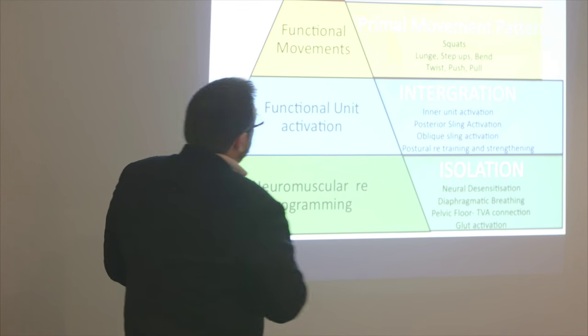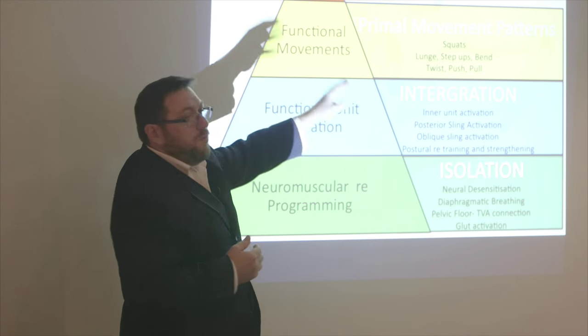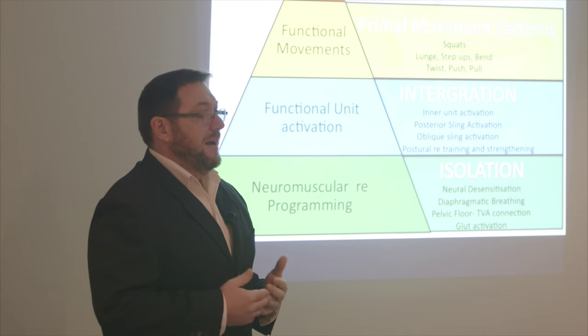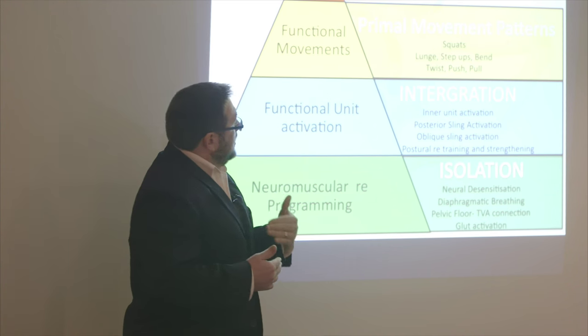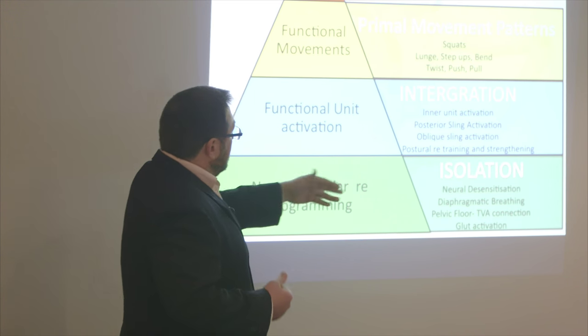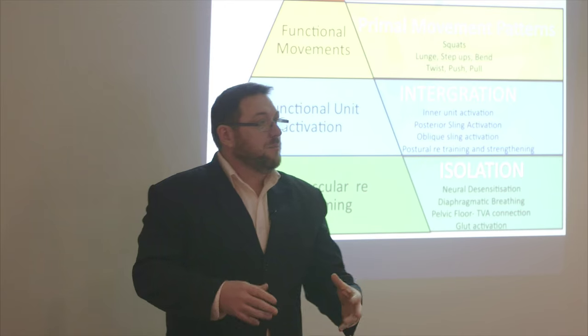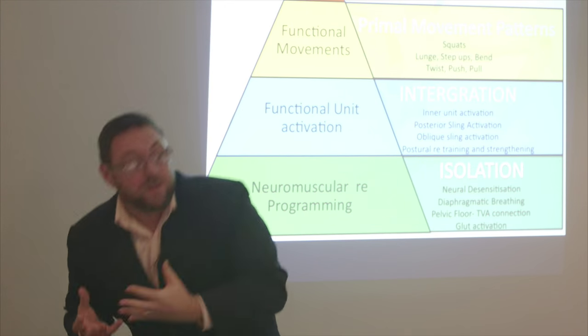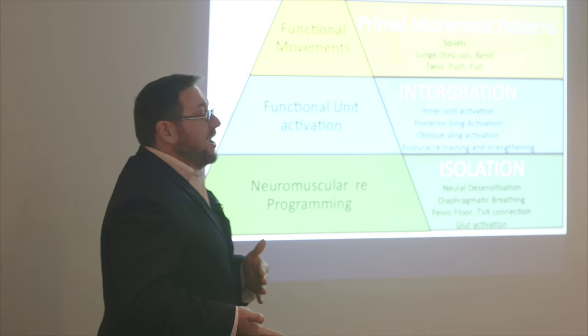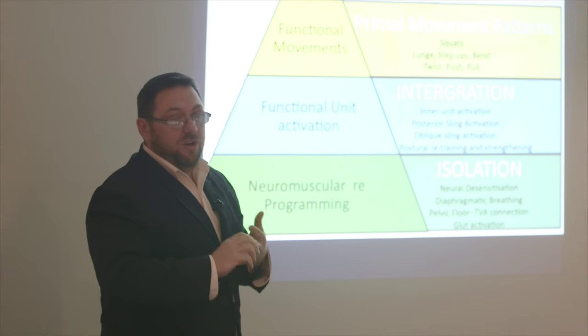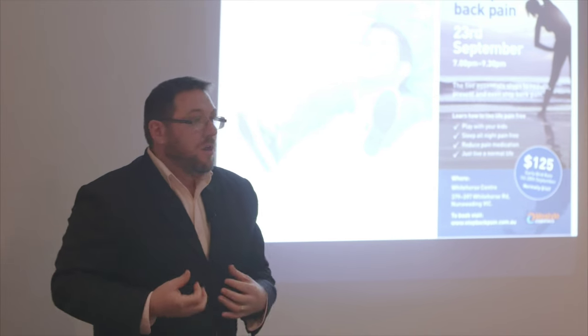The third aspect that we move into is once we've got this working, this is where we really are with Rob now, is we're actually doing what we call primal movement patterns. So everything we do in life is made up of seven movements: squat, lunge, step, bend, twist, push and pull. Once we get these functional units working correctly, we then get them working into these movement patterns. So we're teaching someone to be able to bend and twist, pick something up, bend and put it up on a shelf. And getting all of those muscles and those things working correctly so that you're not getting overloading in the spine, you're not getting dysfunction and you're not getting pain. So that's pretty much in a nutshell what we do.